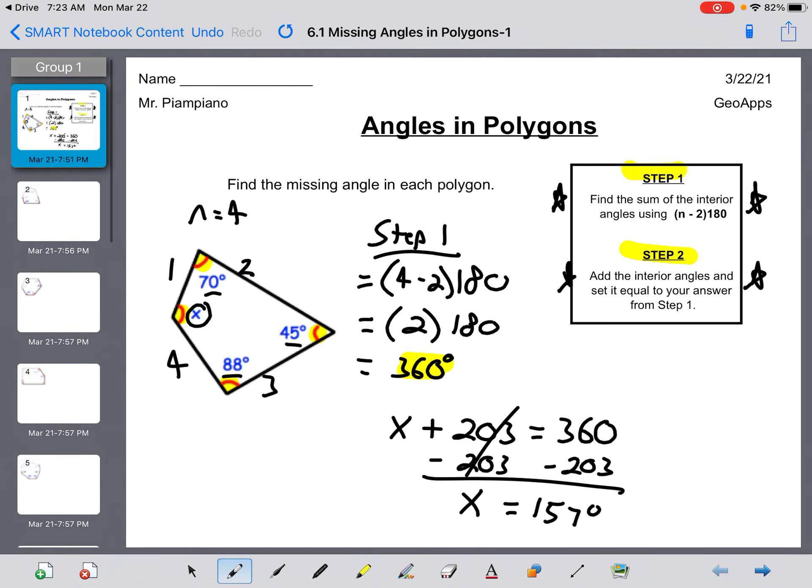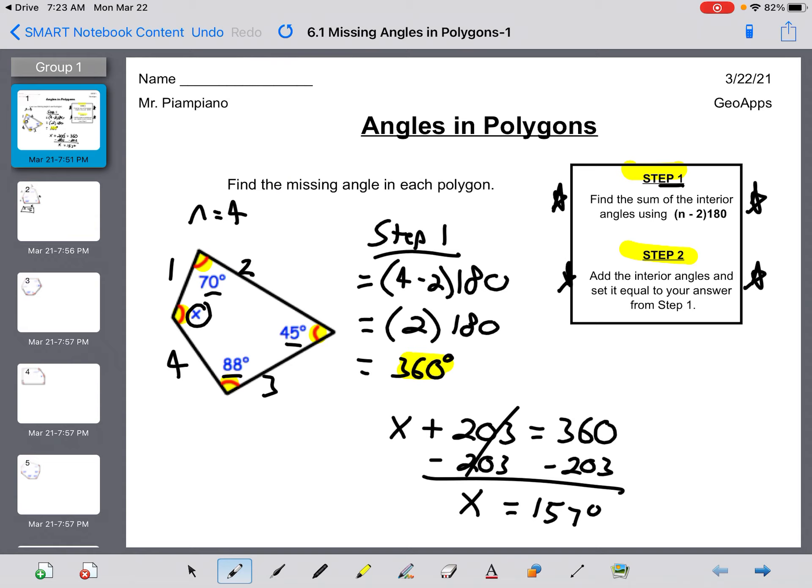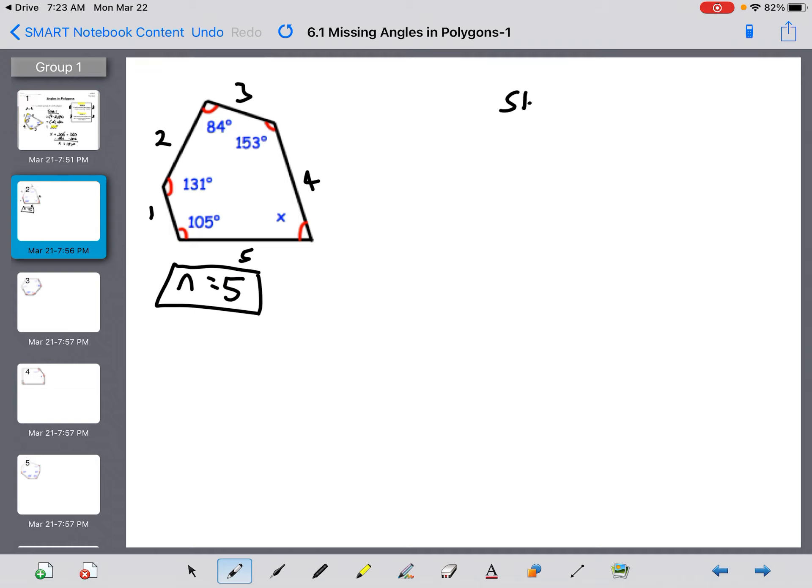That is it, that's all you need to do. If you take a look at number two, I'm going to try and find n. There's five sides so n equals five. Step one is find the sum of the interior angles using n minus two times 180. N is equal to five, so this is five minus two times 180, which is really three times 180, which is 540 degrees.